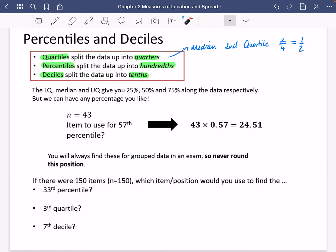For example, if there were 43 items in our data, which item would we need to use for the 57th percentile? Well, it's just like you'd expect. You find 57% of 43, so that would be 43 × 0.57 = 24.51.